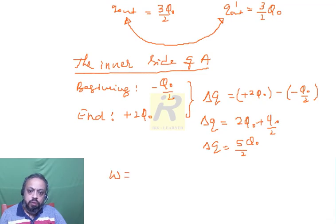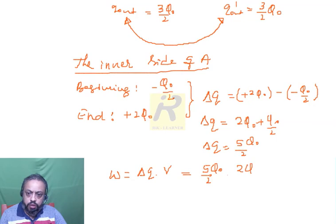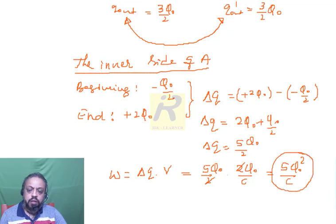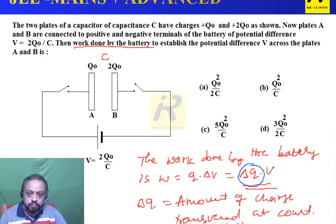Work done equals ΔQ into V equals (5Q₀/2) into (2Q₀/C). The factor of 2 cancels, giving work done equals 5Q₀² divided by C. This is the amount of work done by the battery to establish the potential difference V across the plates.